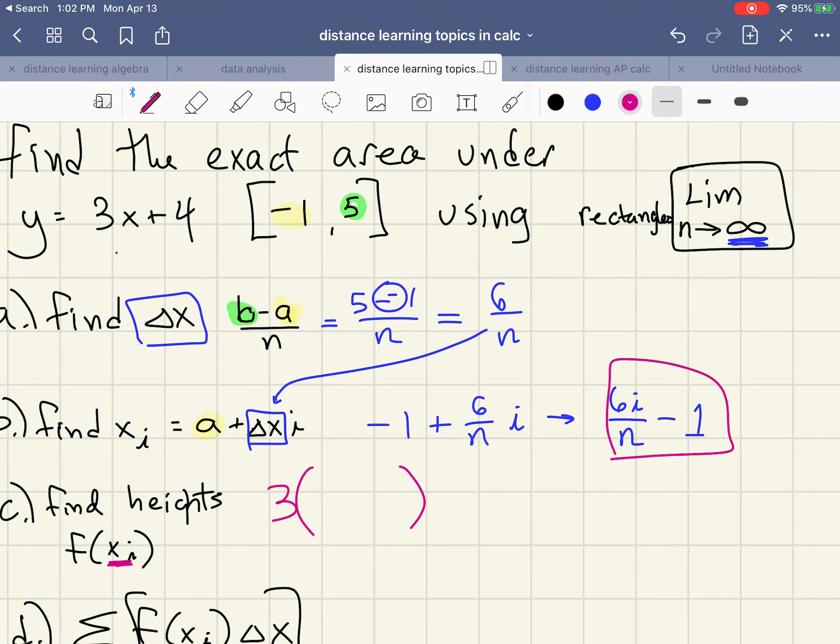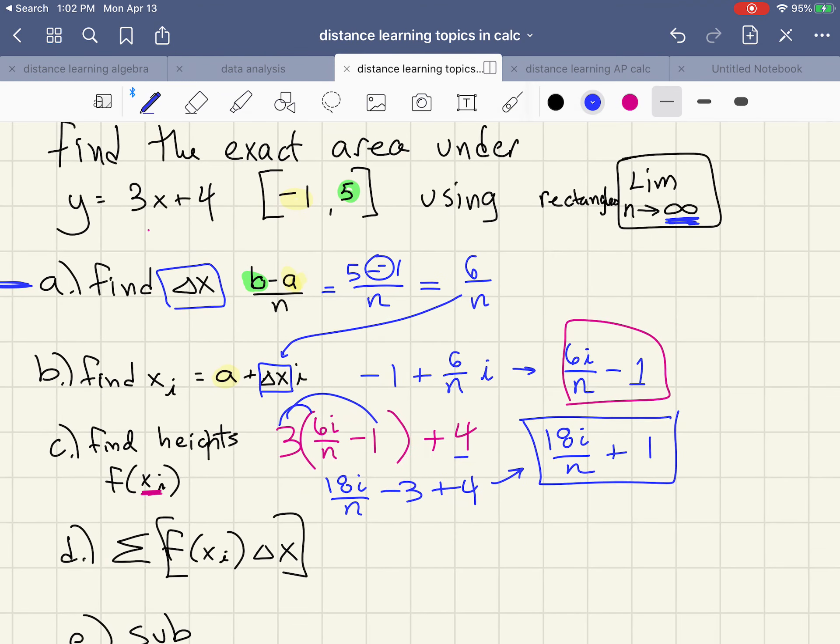This is now going to go into my function, it's going to take the place of x so it's going to be three times all of that plus four. A little bit of algebra to do, I'm going to distribute the three and then I'm going to combine like terms so I'm going to get 18i over n minus three plus four and combining like terms I get 18i over n plus one.